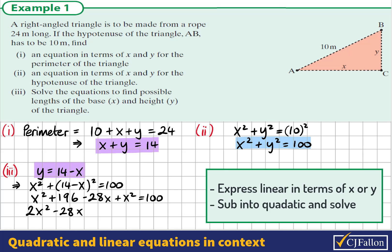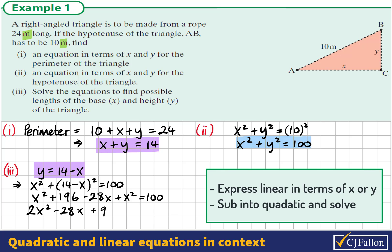And if we take 100 from both sides of the equation, dividing across by 2, we see then that x squared minus 14x plus 48 equals 0.